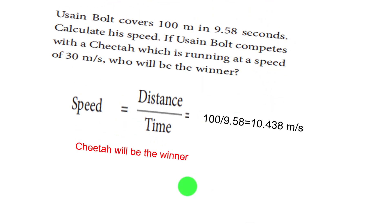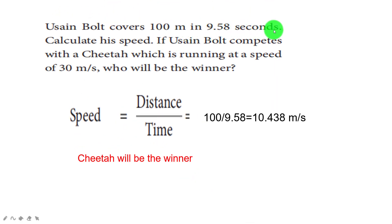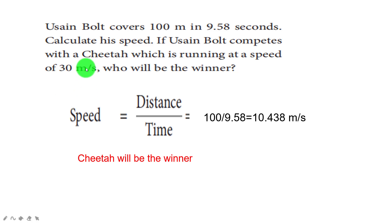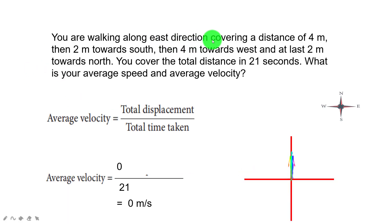Problem: Usain Bolt covers 100 meters in 9.58 seconds — calculate his speed. Speed equals distance by time: 100 divided by 9.58 equals 10.438 m/s. A cheetah runs at 30 m/s. Comparing the two, the cheetah will be the winner because its speed is 30 m/s, much greater than Usain Bolt's 10.438 m/s.